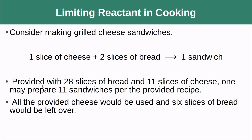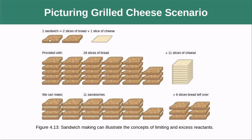Let's say that I go to my bread loaf and I see that I have a fresh loaf — it's got 28 slices of bread in there. I go to get my cheese out and I see I have 11 pieces of cheese left. This means that I can produce at a maximum 11 sandwiches. Two slices of bread and a piece of cheese makes a grilled cheese. If I have 28 slices of bread and 11 slices of cheese, I'm going to be able to produce 11 sandwiches. In doing so, I'm going to consume 22 slices of bread. I have 28 slices of bread though, so I'm going to have six slices of bread left over.